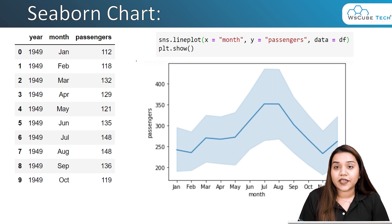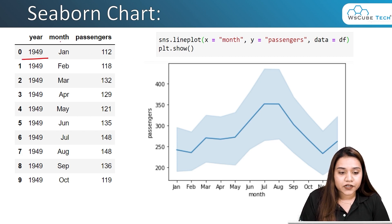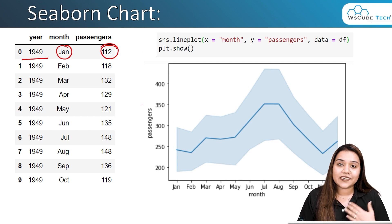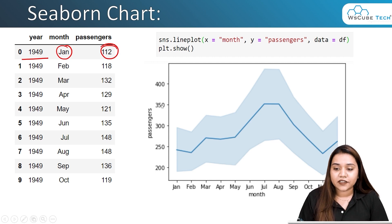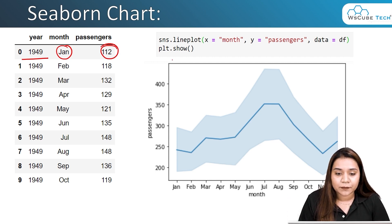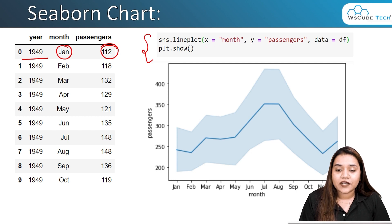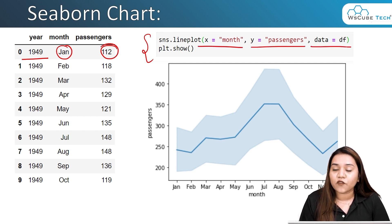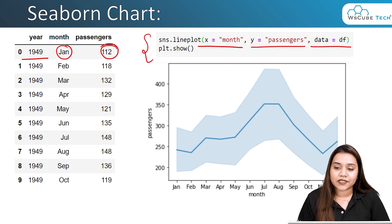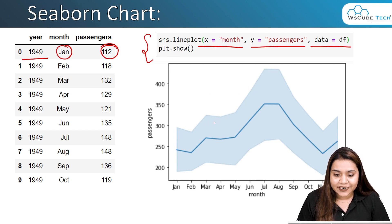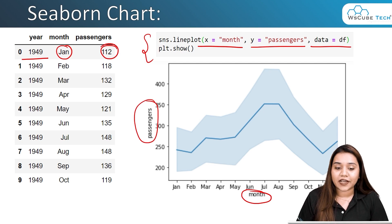Here I have a dataframe with year, month, and number of passengers flying. For example, in January 1949 there were 112 passengers. To create a line plot in matplotlib we need at least three to four lines — defining data, x-label, y-label, and title. In Seaborn, using the alias 'sns', you just write 'sns.lineplot()', define x-axis, y-axis, and pass 'data=df', then 'plt.show()'. It will automatically create the graph with labels, without needing separate title lines.